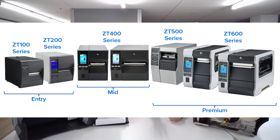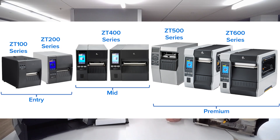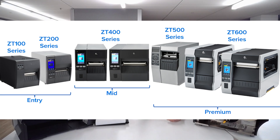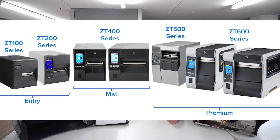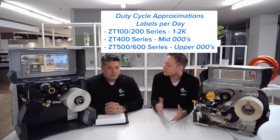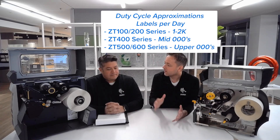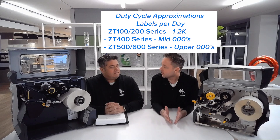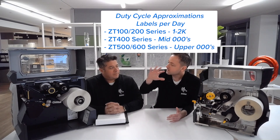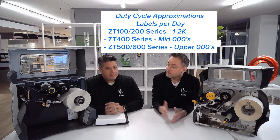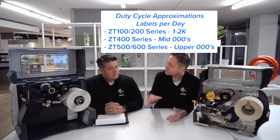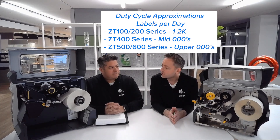So how do I determine duty cycles from our vast options of tabletop printers? We have our tiered portfolio. We have our ZT100 or ZT200 — that's considered our entry level tabletop. Then we have our ZT400 model, that's our mid tier. And then we have our ZT500 and ZT600, that's our premium tier. Using a four by six label — probably the most common label — if you're in those low thousands, like 1,000 to 2,000 labels per day, the ZT100/200 is a great fit. If you start getting into the mid thousands, look towards the ZT400 line. And then if you're up in those high thousands and running 24/7 operation, the ZT500 and ZT600 is the best fit.